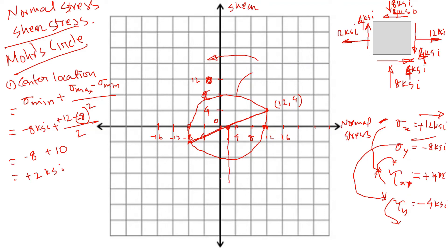Now we know the center is at 2, and we can find the radius. From the center at 2 to the x face point at 12, the horizontal distance is 10. The vertical distance is the shear stress of 4. So the radius equals the square root of (10 squared plus 4 squared). Calculating that, the radius is 10.77 KSI.